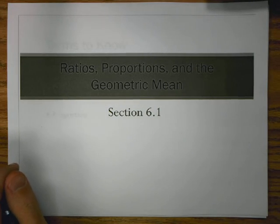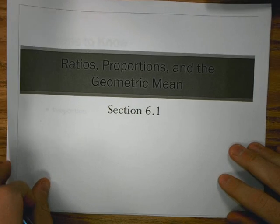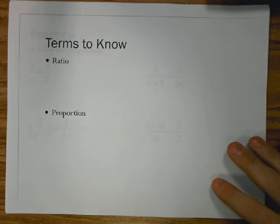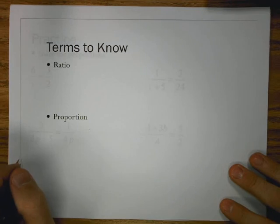Section 6.1 looks at ratios, proportions, and the geometric mean. This is an introduction to Chapter 6, which is on similarity.